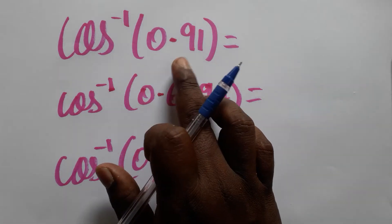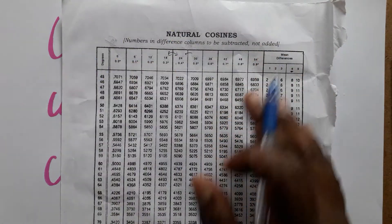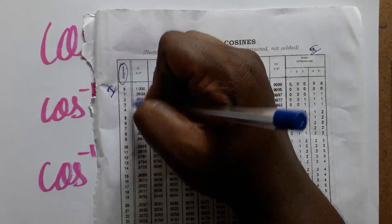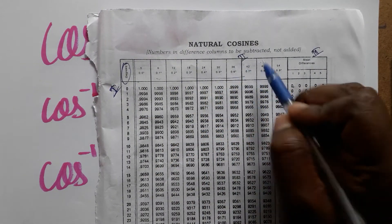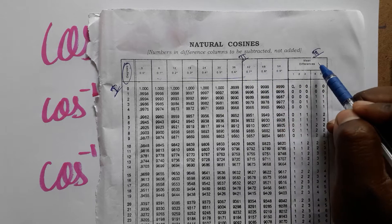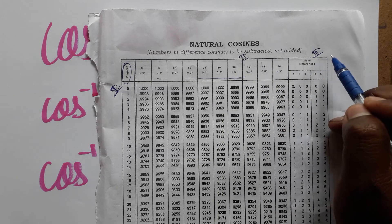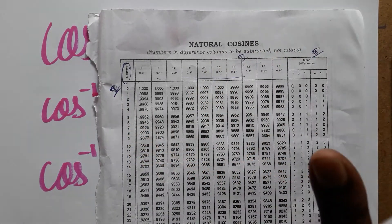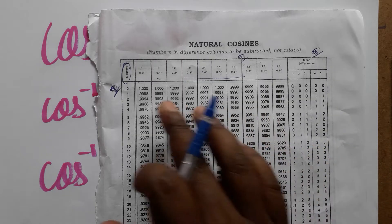In the cosine table we have three columns. The first column represents degrees, the second column represents minutes, and the third column is the mean difference. Using just the first two columns will give an approximately correct value, so there is no need to use the third column.